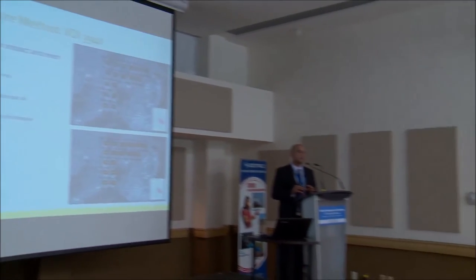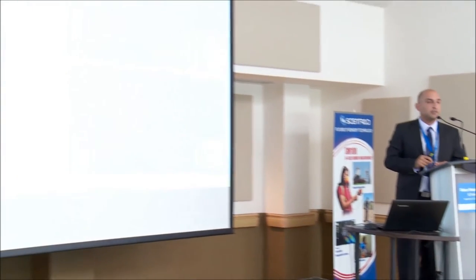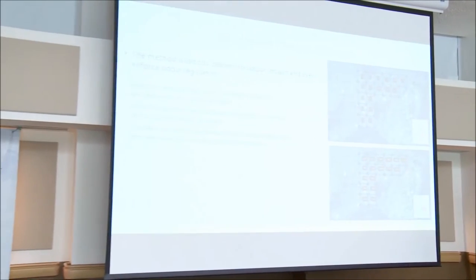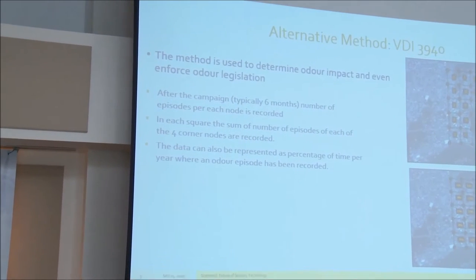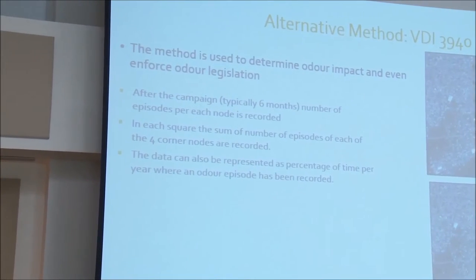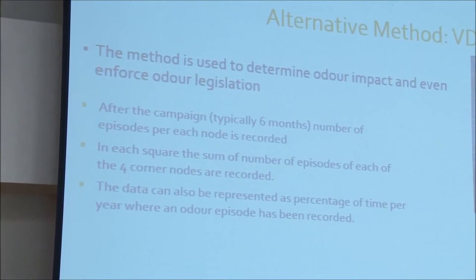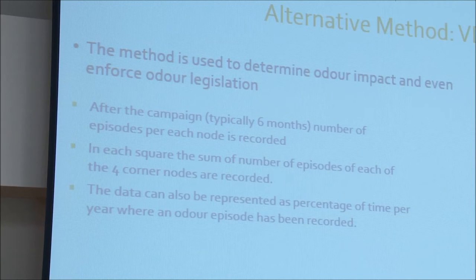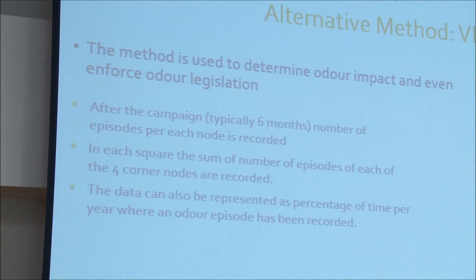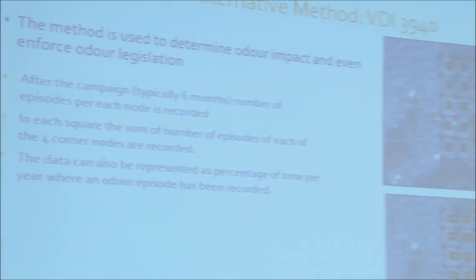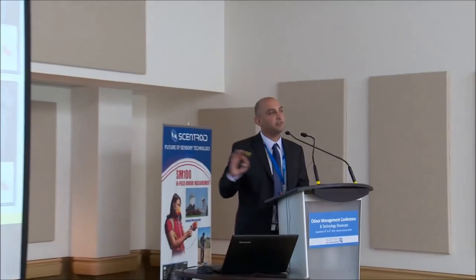You get a result map showing how many times you went to each node and smelled something. For example, a square showing 'two' in the top left means that out of 52 visits to that node, they detected odors twice. In German law there are rules about odor hours — the percentage of time they can go there and smell something. But there is one issue: it doesn't say how much they smell. Was it a little bit? Was it a lot? It's just identification — if they identified the factory, it counts as an episode.